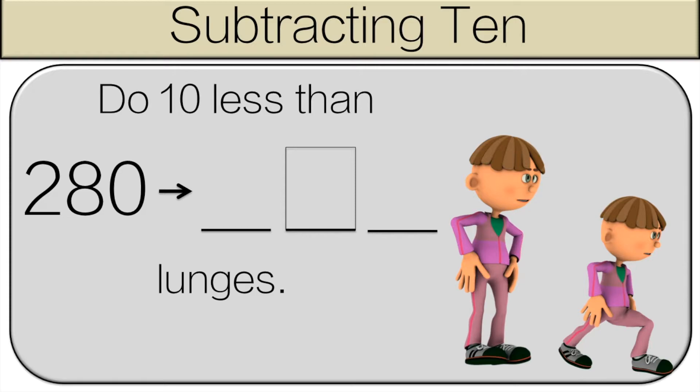So here we have to figure out what is 10 less than 280. Think about it. We'll go over it together. So 10 less than 280 is 270. What number is in the box? We have a 7. So you're going to do 7 lunges.